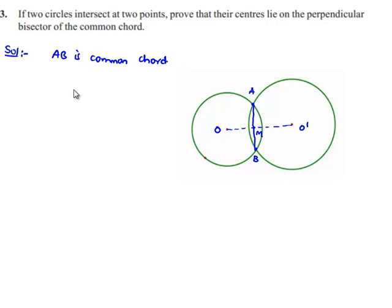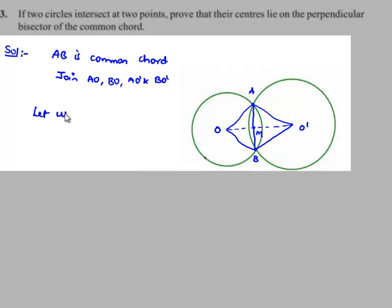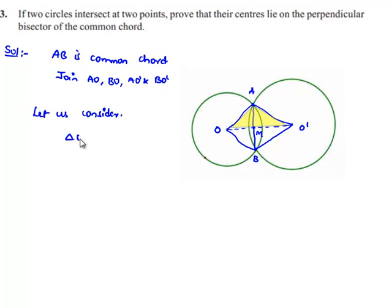Let us join AO, BO, AO', and BO'. Now let us consider triangle OAO' and triangle OBO'.